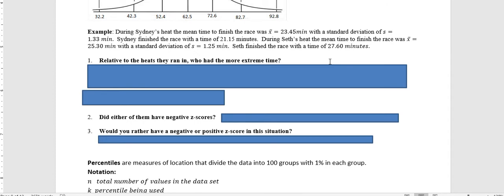We're asking relative to the heats that they ran in, who had the more extreme time? In other words, the time that was more extreme when you look at standard deviations or z-scores. Did either of them have a negative z-score? And would you rather have a positive or negative z-score in this situation?